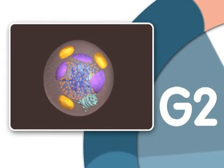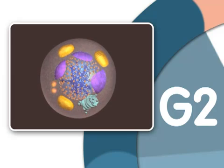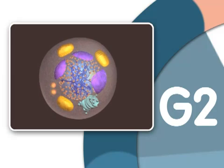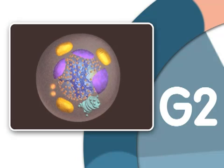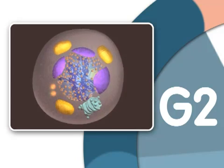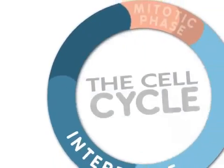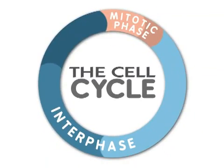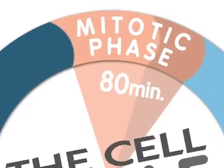The cell next enters another growth stage called G2, or Gap2. It is during G2 that the cell finishes growing. Once the cell has duplicated DNA in the nucleus and two centrosomes have appeared in the cytoplasm, mitosis can begin. For a typical eukaryotic cell, this will last about 80 minutes.